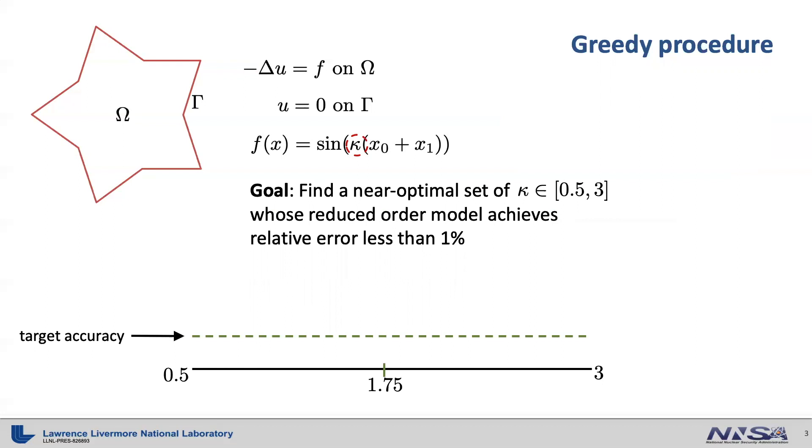Let's say we choose the midpoint, that is kappa equals 1.75. Then one can compute a relative error of the reduced order model at points that cover the parameter space of kappa between 0.5 and 3. Because we have built the reduced order model at kappa equals 1.75, it will be the most accurate at that point. And the accuracy will deteriorate as we go far away from kappa equals 1.75.